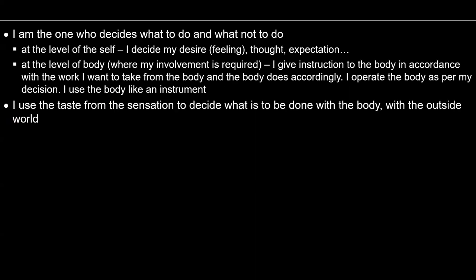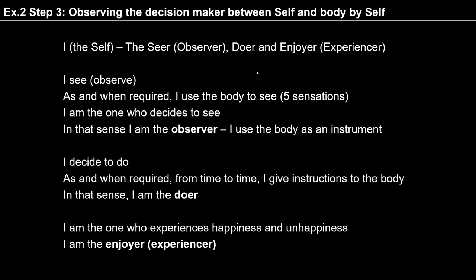In step 3, we are observing that I am seer, I am doer, and I am enjoyer. Seer means I observe, I see my body as and when required. I am the observer — the role of eyes is to pass information to me, but it is me who decides whether to see those images or not. Similarly, I am the doer — I decide what to do with the information coming from the body, what to do and what not to do. And I am the one who experiences happiness and unhappiness — in that sense I am the enjoyer, the experiencer. So I am seer, doer, and enjoyer, and the body is my instrument.